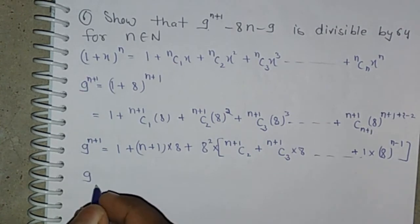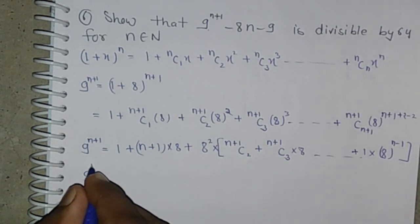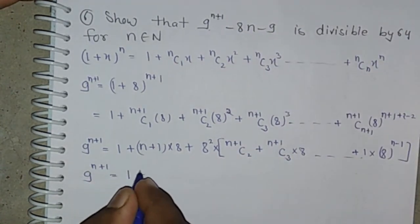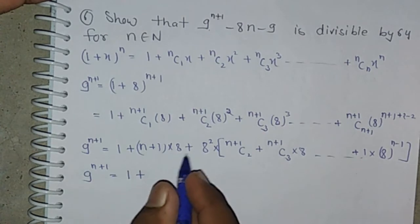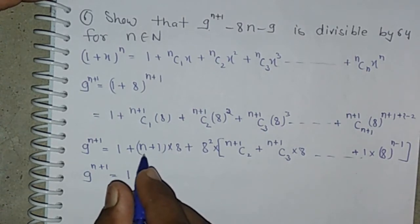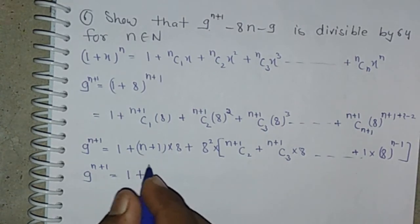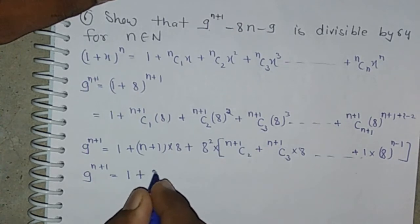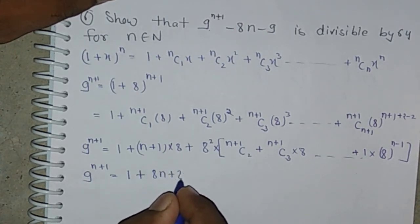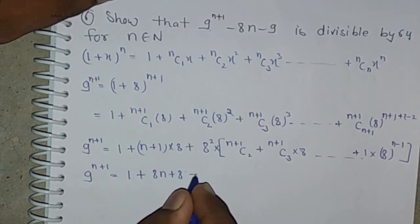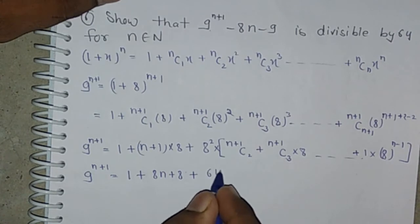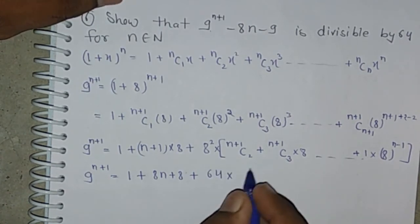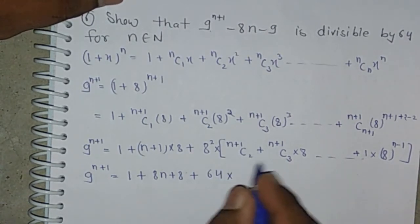So 9 to the power n plus 1 equals 1 plus (n plus 1) times 8 plus 64 times a positive integer. That is, 9 to the power n plus 1 equals 1 plus 8n plus 8 plus 64 times a positive number, which is 9 plus 8n plus 64 times a positive number.